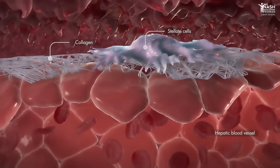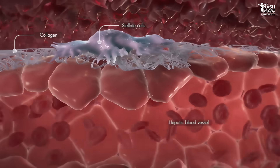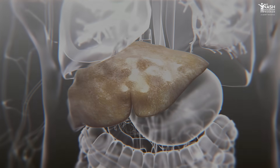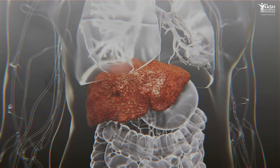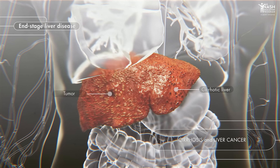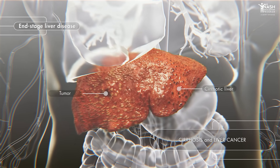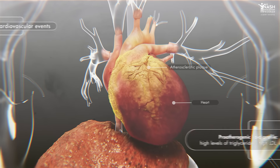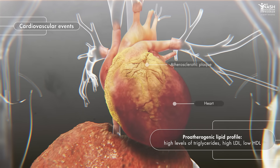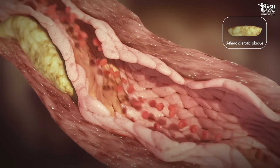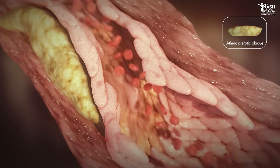As a result of this activation, hepatic stellate cells secrete collagen fibers that form scar tissue, leading to hepatic fibrosis. NASH can evolve to cirrhosis or hepatocellular carcinoma, but it is much more than just a liver disease. It also increases the risk of life-threatening cardiovascular events in association with the pro-atherogenic lipid profile of NASH patients.